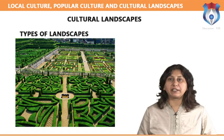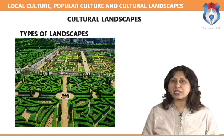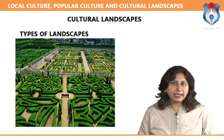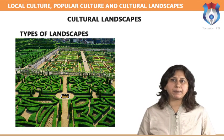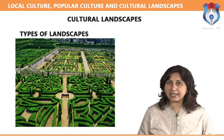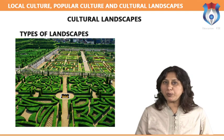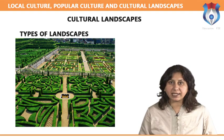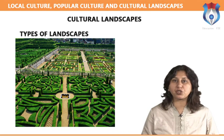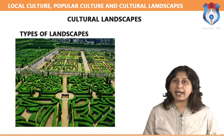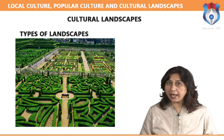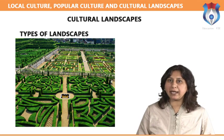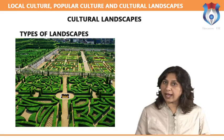The final category is the associative cultural landscape. The inclusion of such landscapes on the World Heritage list is justifiable by virtue of the powerful religious, artistic or cultural associations of the natural element, rather than material cultural evidence, which may be insignificant or even absent.